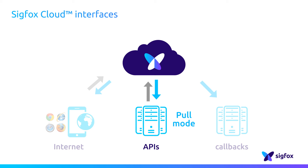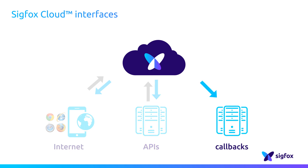The best practice for retrieving message data from the Sigfox Cloud is in fact using the third interface: callbacks. As another computer interaction, it enables automatically receiving new events such as messages in push mode.